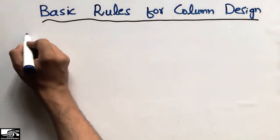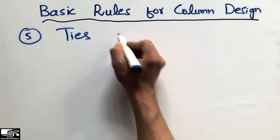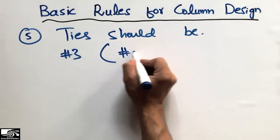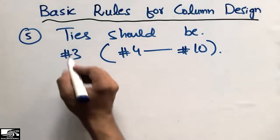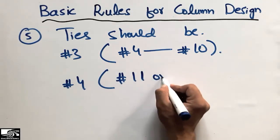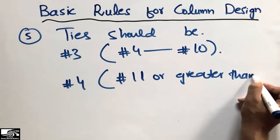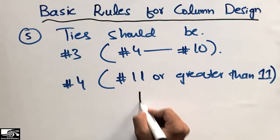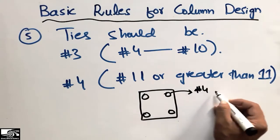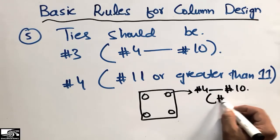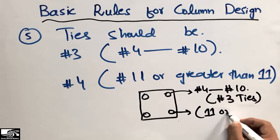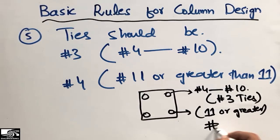The fifth and last point about the design of the column is regarding the ties. The ties should be a number 3 bar when the longitudinal bars are number 4 up to number 10. The ties should be a number 4 bar if the longitudinal bars are number 11 or greater than 11. So if the longitudinal bars are between number 4 and number 10, use a number 3 tie bar; if number 11 or greater, use a number 4 tie bar.